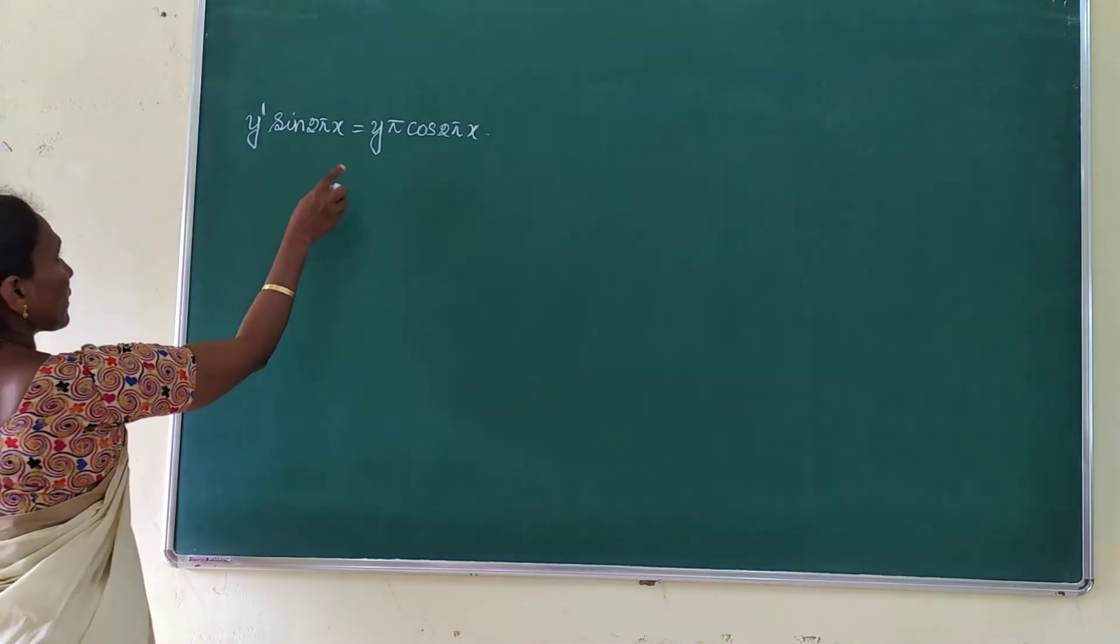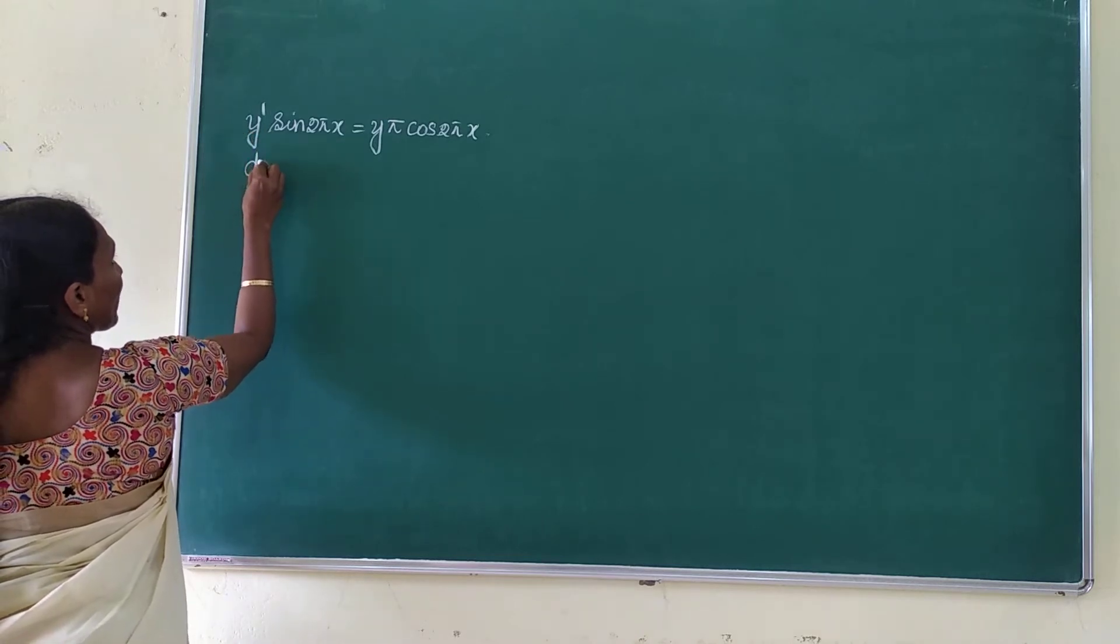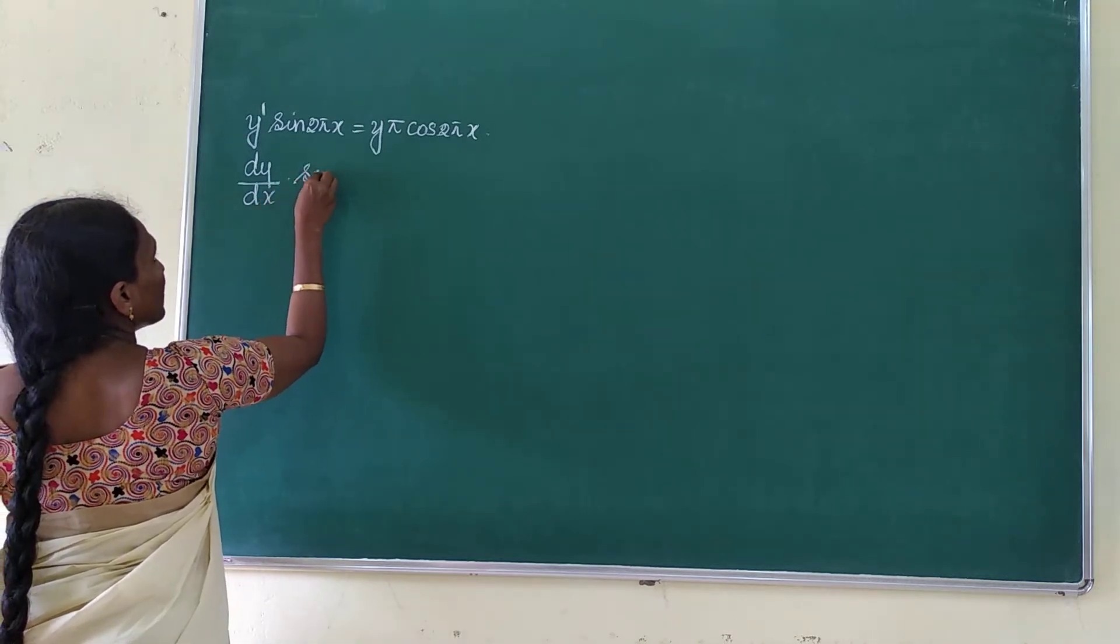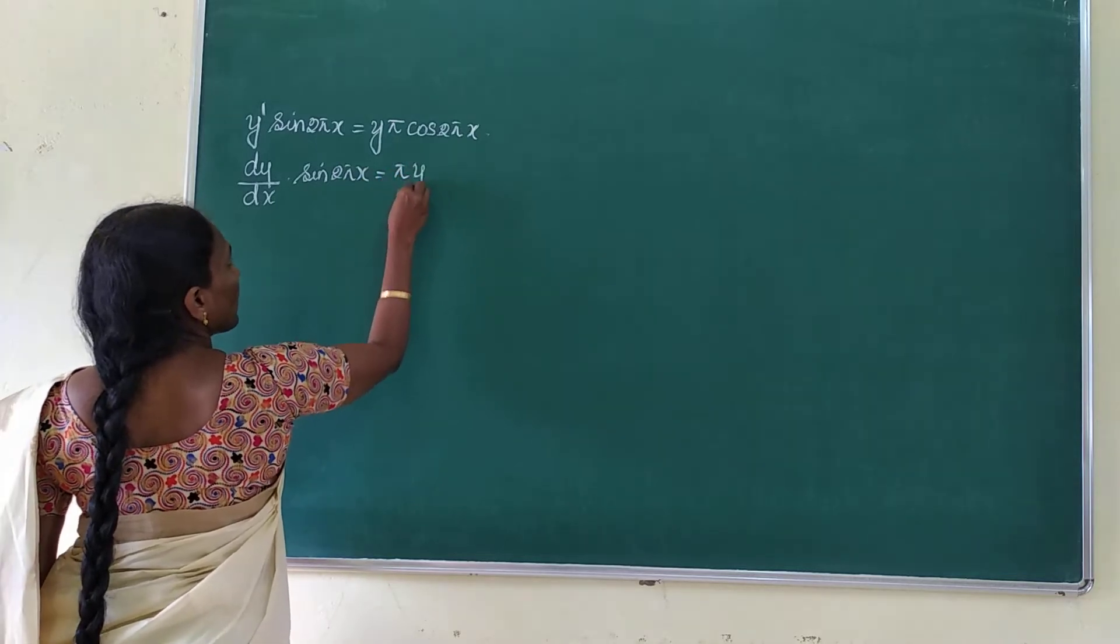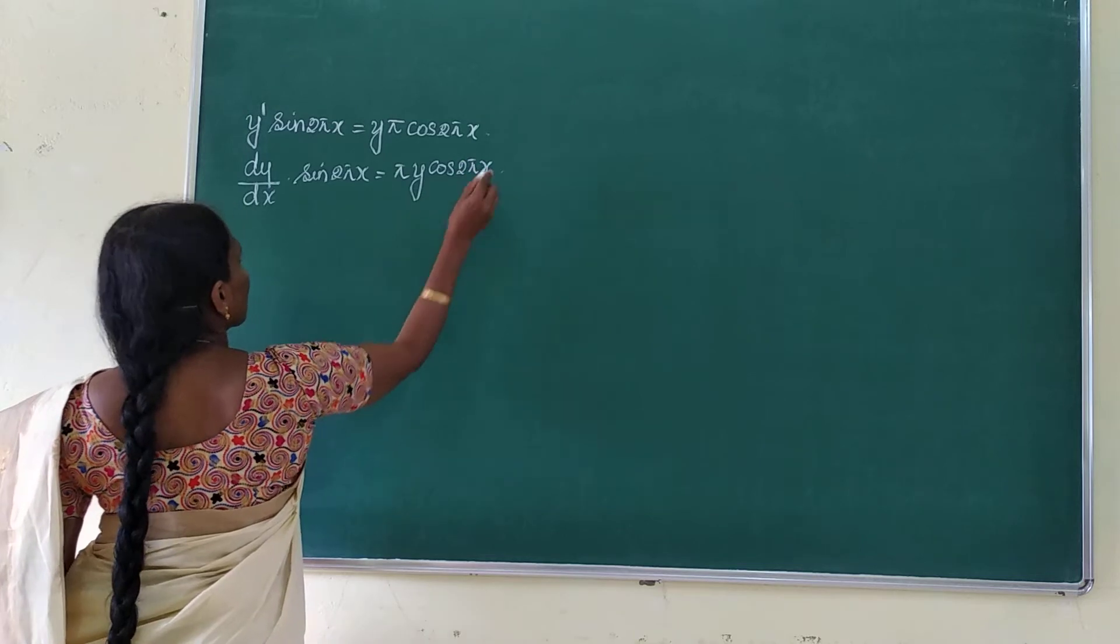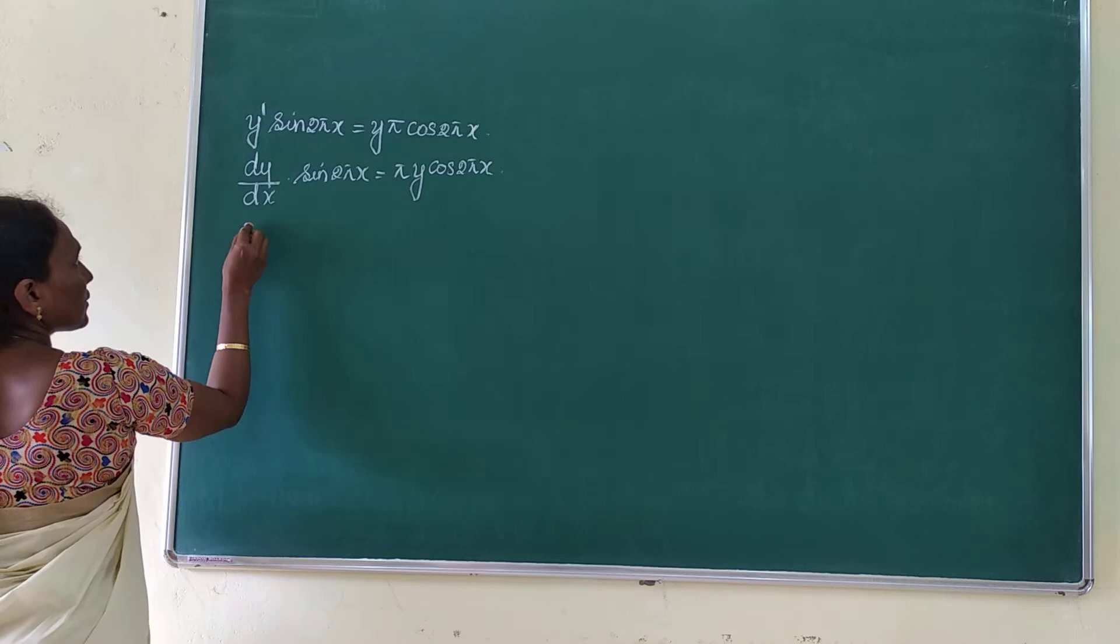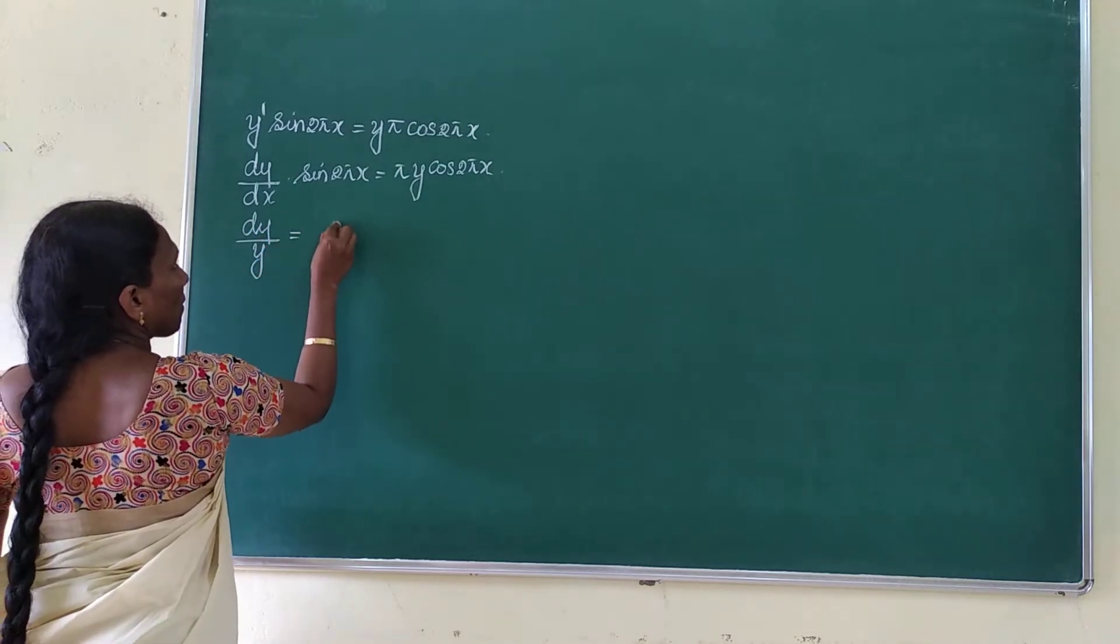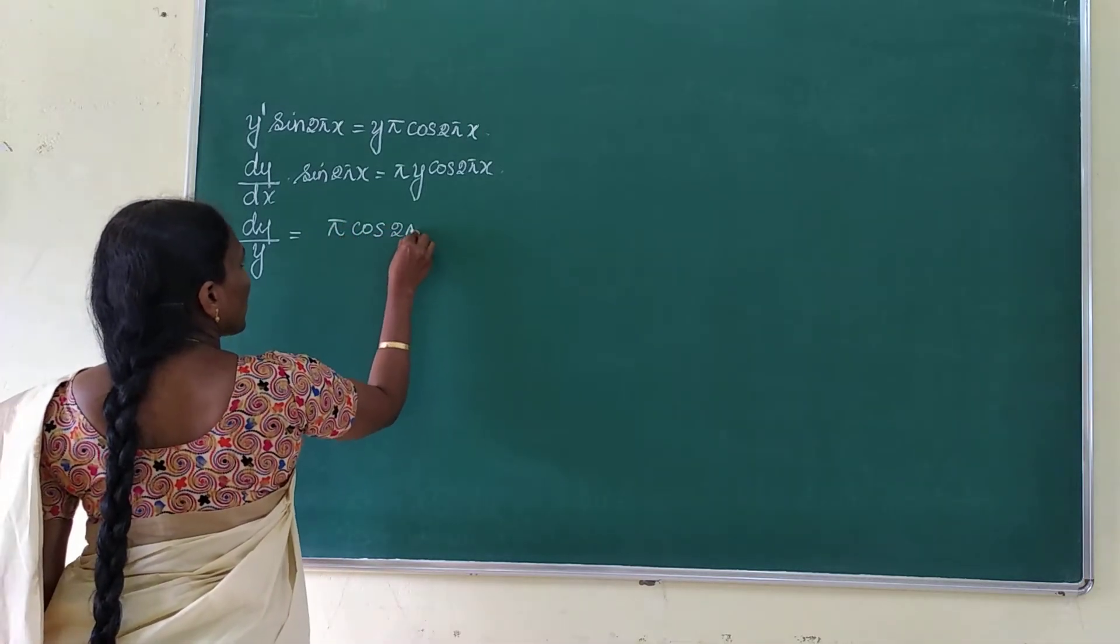Here we can write this y' sin 2 by x is equal to 5y cos 2 by x. And here we can write this y' sin 2 by x is equal to 5 cos 2 by x.